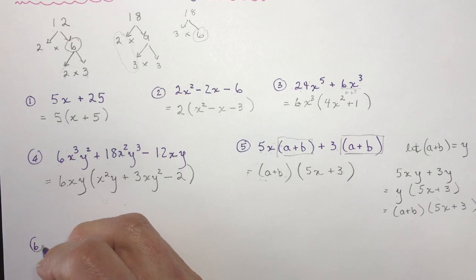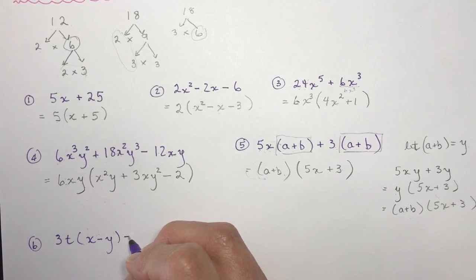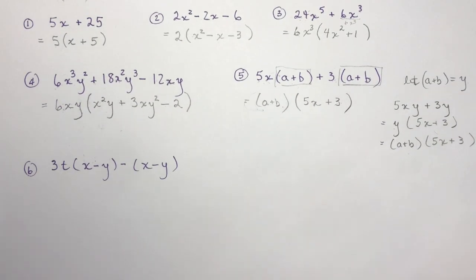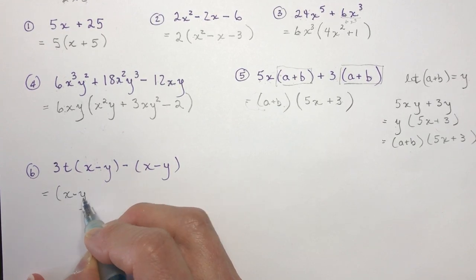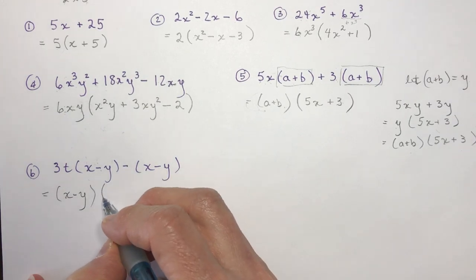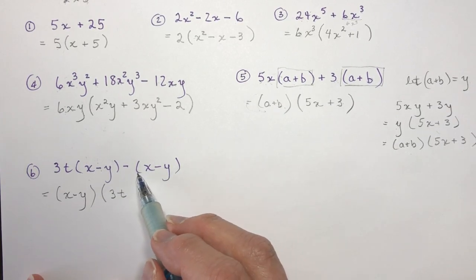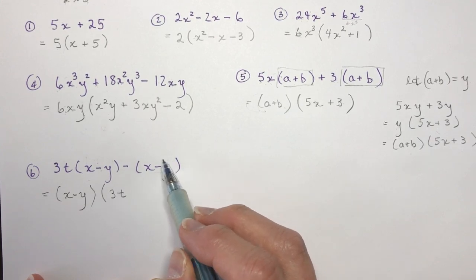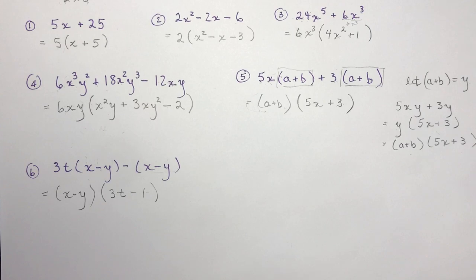A similar but tricky example: 3t times (x minus y) minus 1 times (x minus y). People often make mistakes here. After the last example, you'd say take out (x minus y). Dividing each term by (x minus y): the first gives 3t, and the second — just like dividing 4 by 4 or 10 by 10 — goes in once with a minus sign, so you get minus 1. Result: (x minus y) times (3t minus 1). Expand to verify.